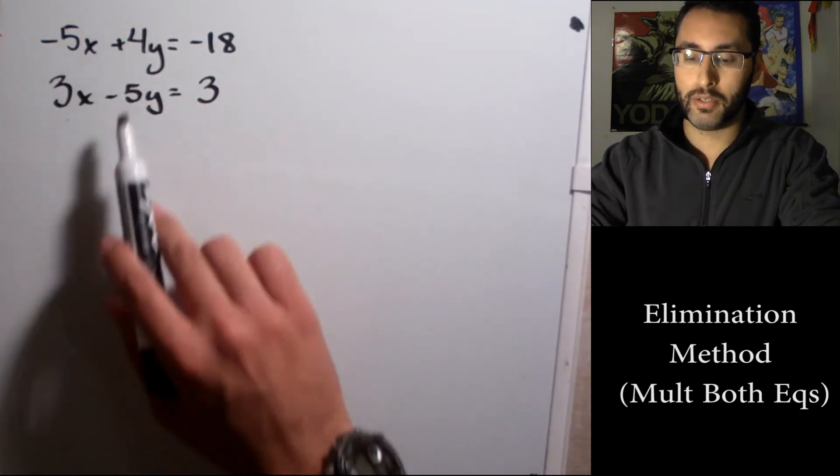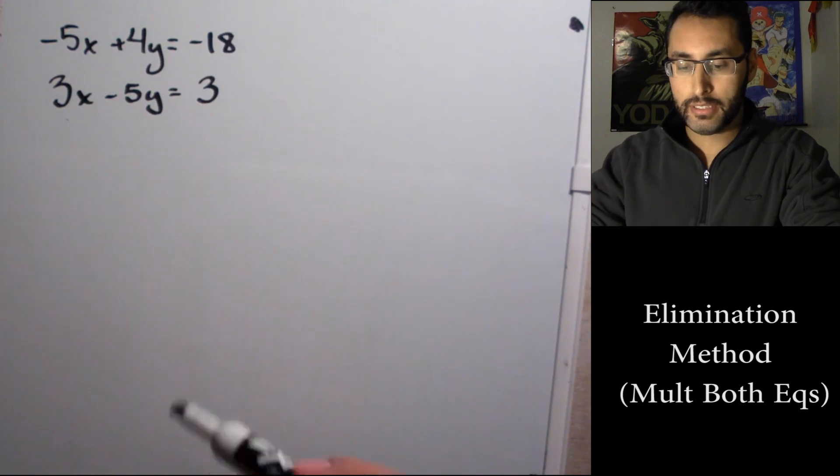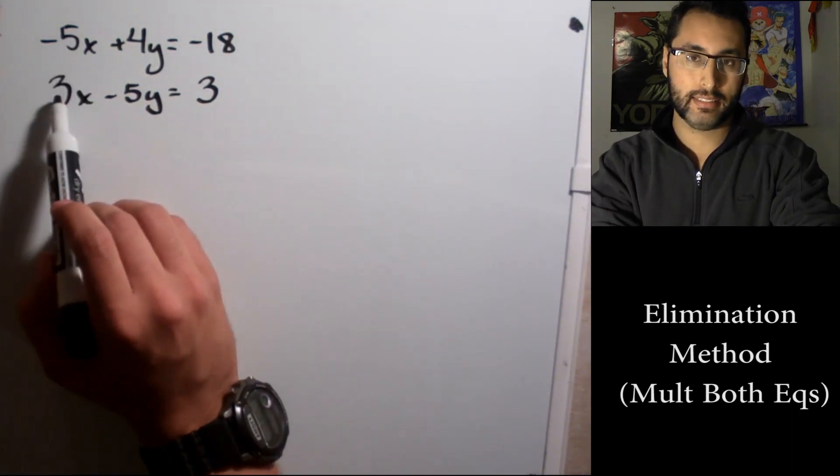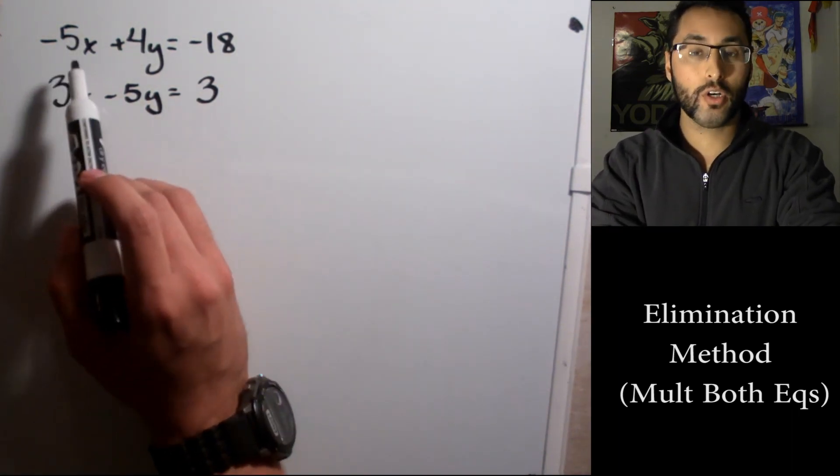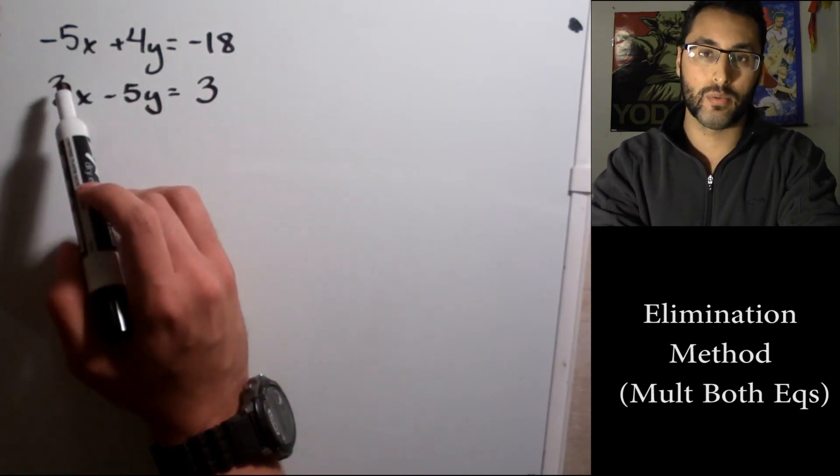You can eliminate the x's or the y's, it doesn't matter, you still get the correct answer. But let's try to eliminate the x's. Now if I look at the coefficients, it is a negative 5, let's forget about that and just look at 5 and 3.